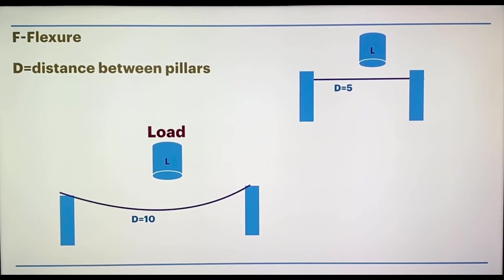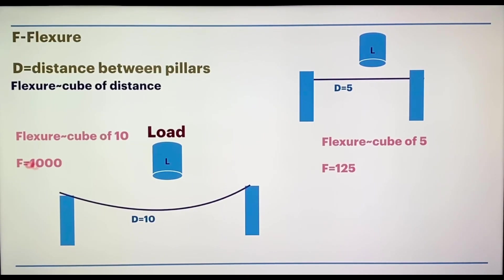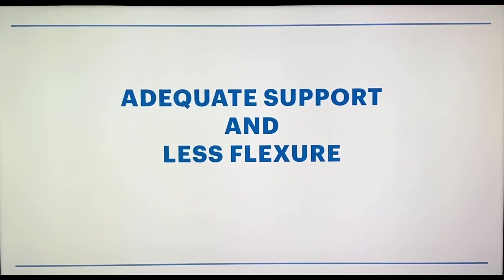Why has this happened in the second condition and not in the first? Flexure is directly proportional to the cube of distance. When you calculate the cube of 5, flexure is 125. But as the distance between the supports has increased to 10, the flexure has also increased exponentially. The takeaway is: as the distance between supports increases, because of the flexure, our bridge will collapse. We require adequate support and less flexure. Our topic revolves around these two main conditions: support and flexure.